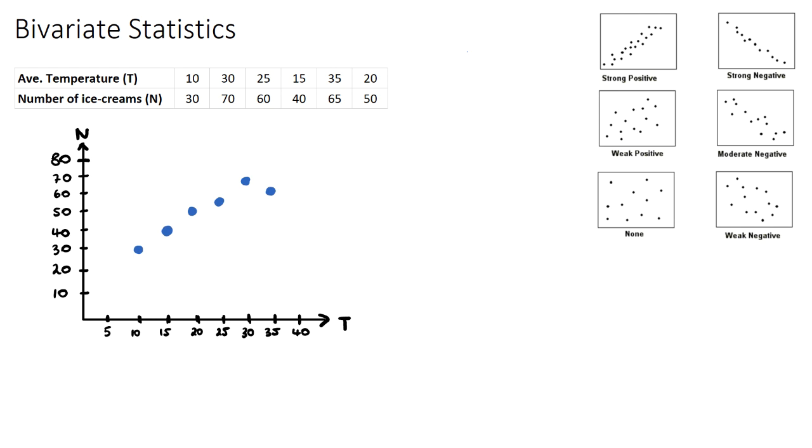So bivariate statistics looks at the relationship of two different variables, and in the example here, we have some business selling ice creams, and we want to see if there's a relationship or some trend that's happening where the number of ice creams they sell depends on the temperature. And this is a classic example of two variables which do typically depend on each other.